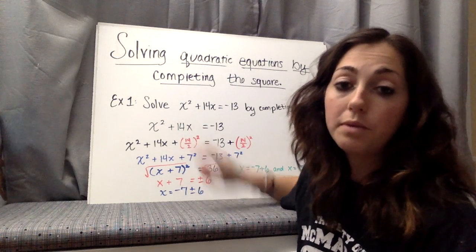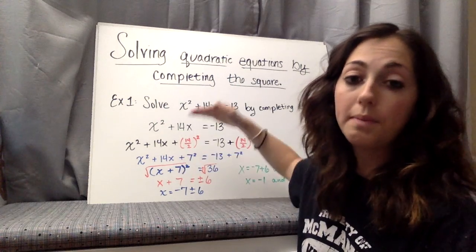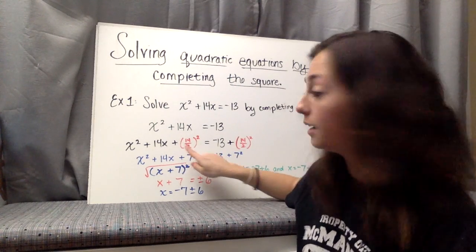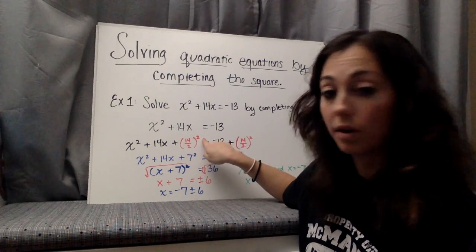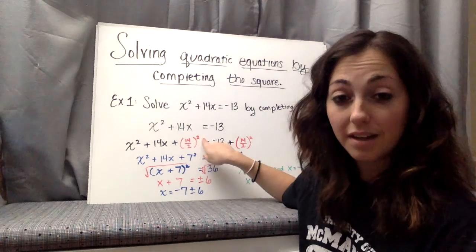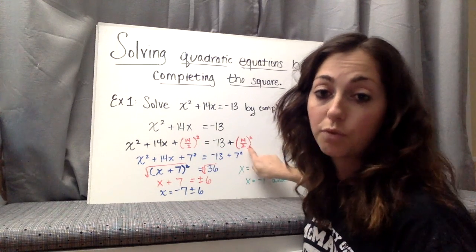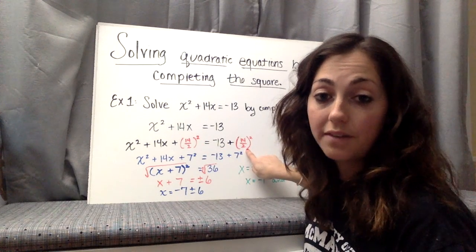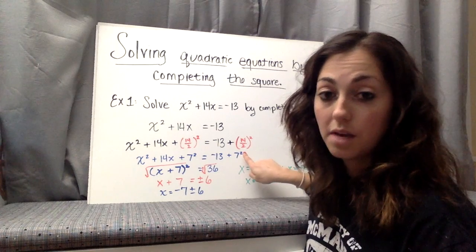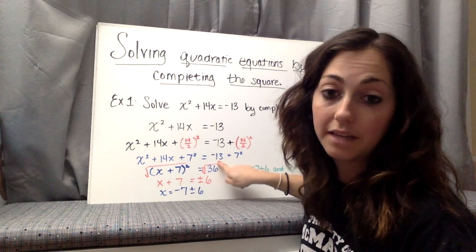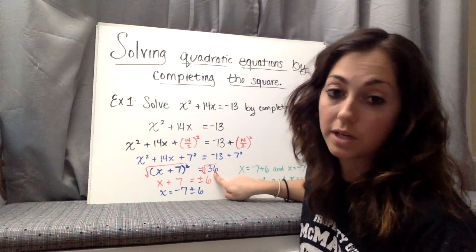Remember, we're working with equations. So if we start all the way back at the top, when we added 14 over 2 squared to the left side, you also had to do that to the right side. So 14 over 2 is 7, and 7 squared is 49. When we add 49 to negative 13, we get a positive 36.